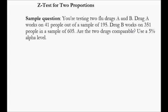You're testing two flu drugs, A and B. Drug A works on 41 people out of a sample of 195. Drug B works on 351 people in a sample of 605, and we want to know are the two drugs comparable.